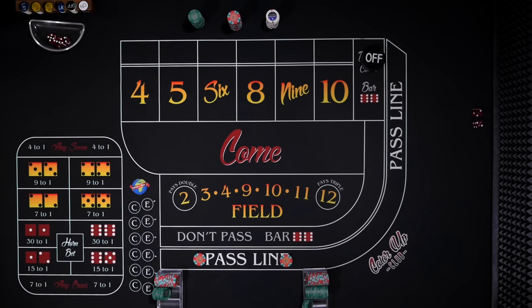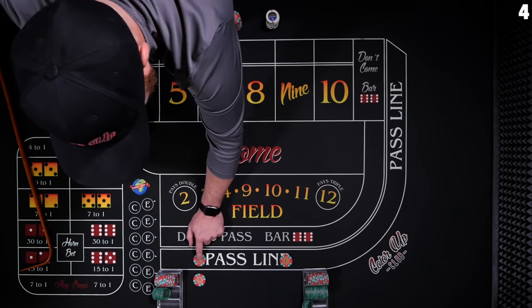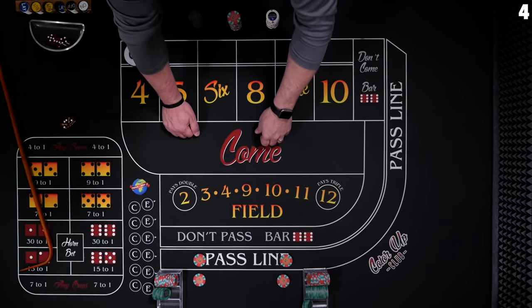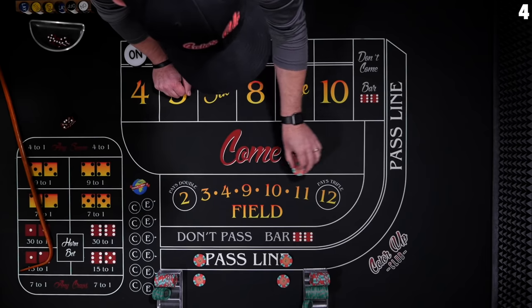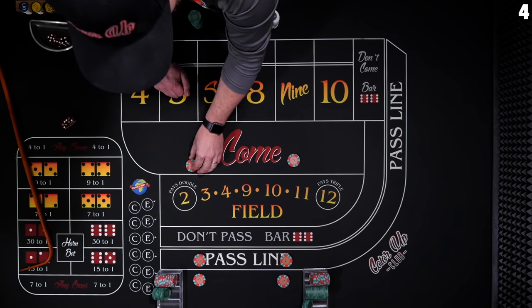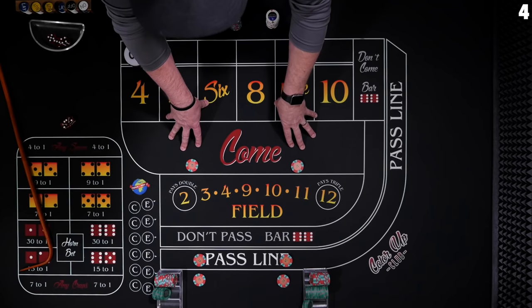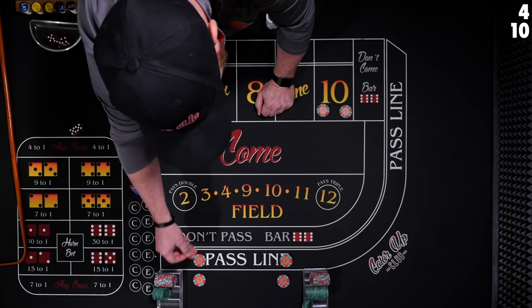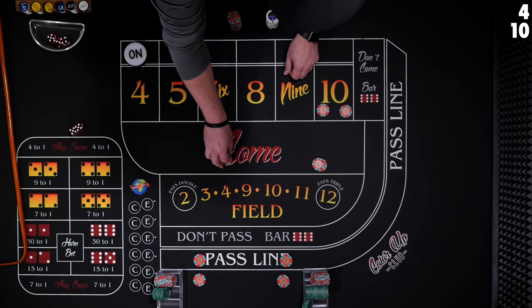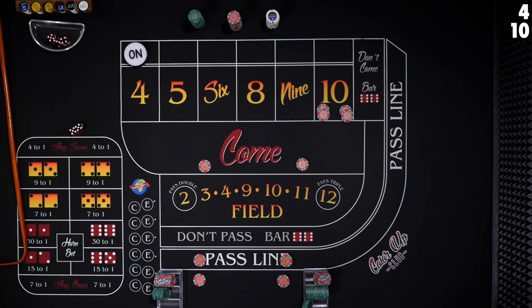Here we go — shooter's coming out, looking for a point. Four the hard way, so both players have a bet on the four. Our first player puts down single odds — $5 — and our ten dollar player puts down $10 in odds. Then each of them is going to get an additional number by placing a come bet. When placing a come bet, just put it in the come in front of you. Ten the hard way — so we're covering both outside numbers. These will move to the ten, we throw down money and ask the dealer to place odds on our ten. He'll take your bet and set them up, then we make an additional come bet to get our third point.